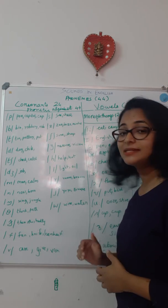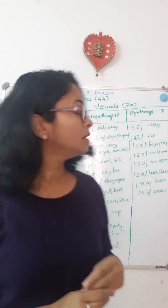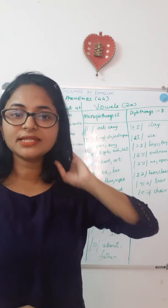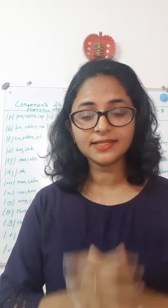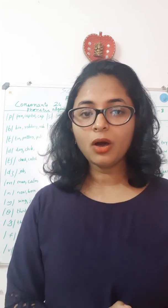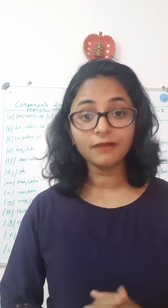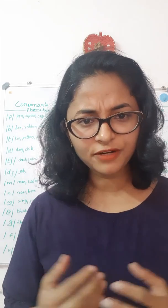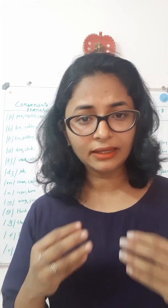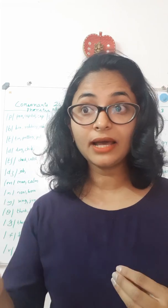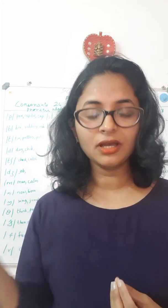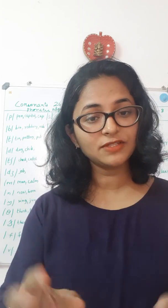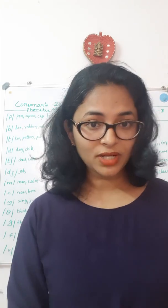Let us now look at what vowels are. There are 20 vowels in English, and sounds during the production of which air escapes through the mouth freely or without any friction are called vowel sounds. For example, /iː/ as in eat — is there any friction? No friction. /p/ as in pin — there is friction. So that is the difference between a consonant and a vowel sound. Air escapes freely — they are called vowels.